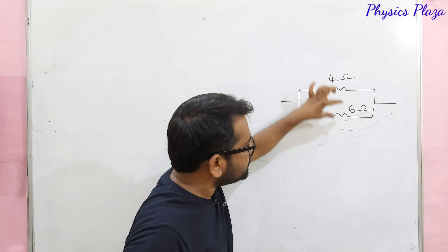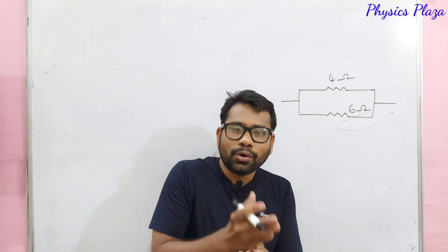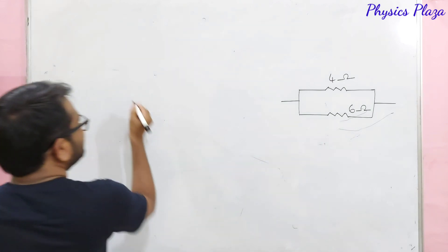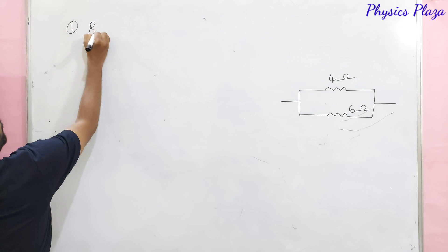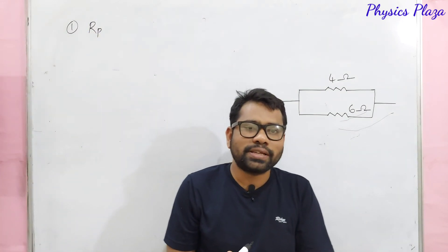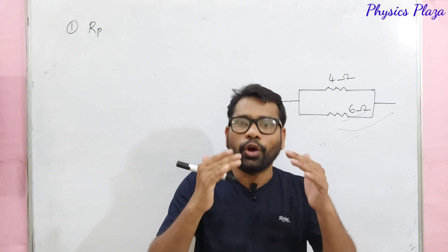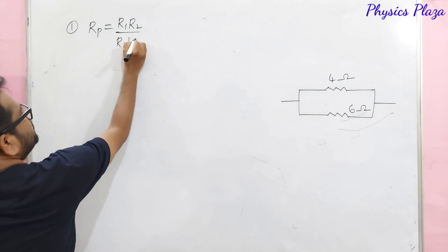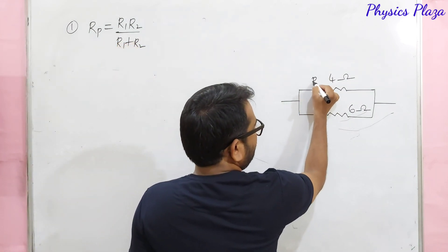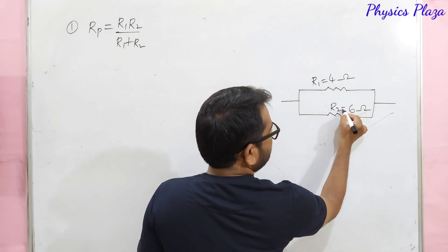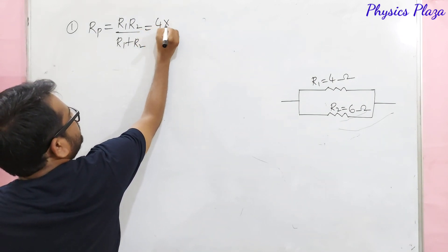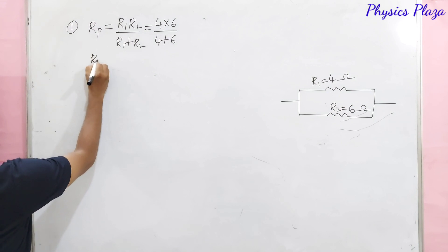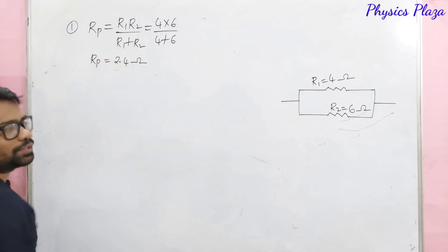First, look here. Two resistors are connected in parallel. The first question: how to calculate the resultant resistance of these two resistors? As they are connected in parallel, we use the direct formula. We have Rp = R1×R2 / (R1+R2). Let R1 = 4 ohm and R2 = 6 ohm. Substituting: 4×6 / (4+6) = 24/10 = 2.4 ohm. So Rp = 2.4 ohm. We solved the first numerical.